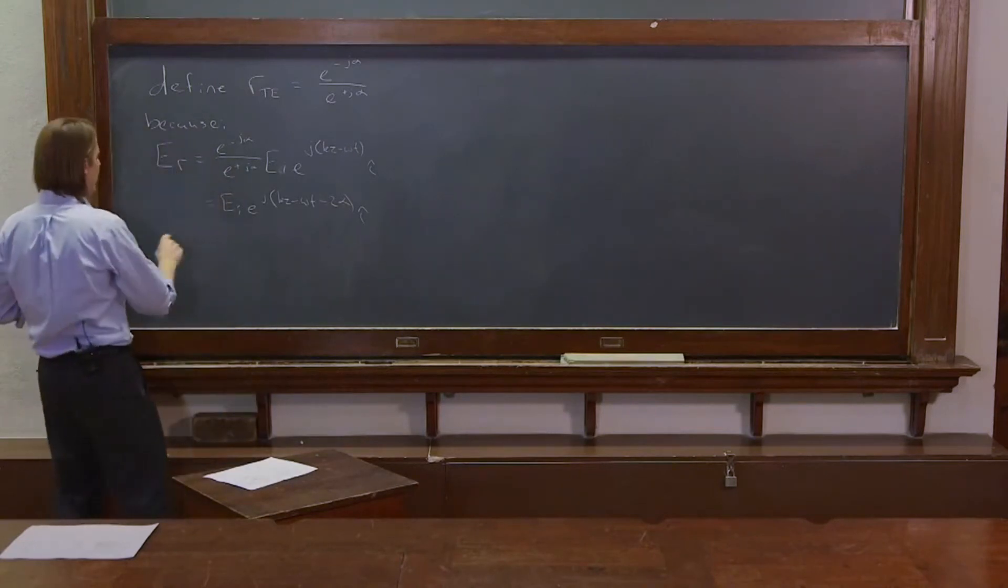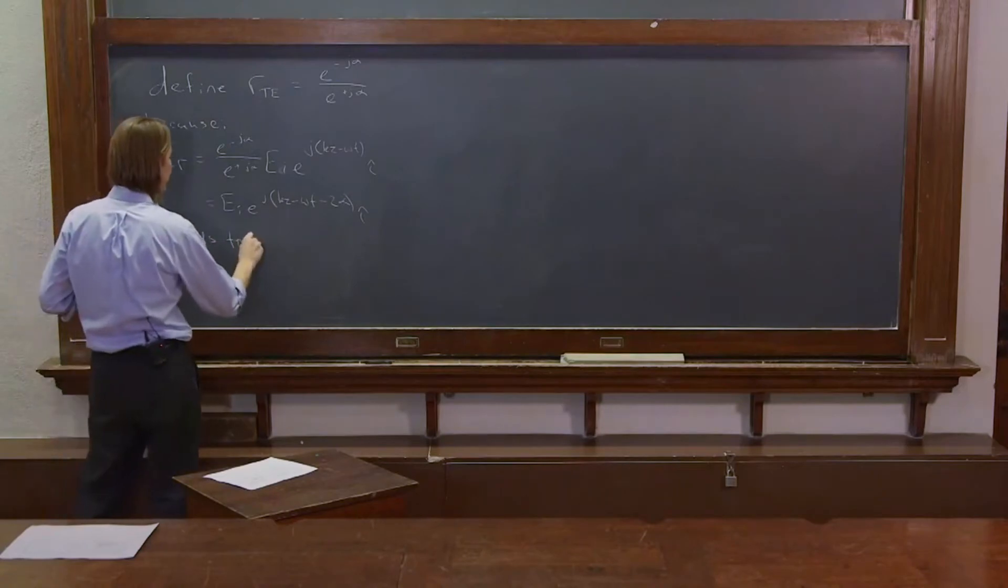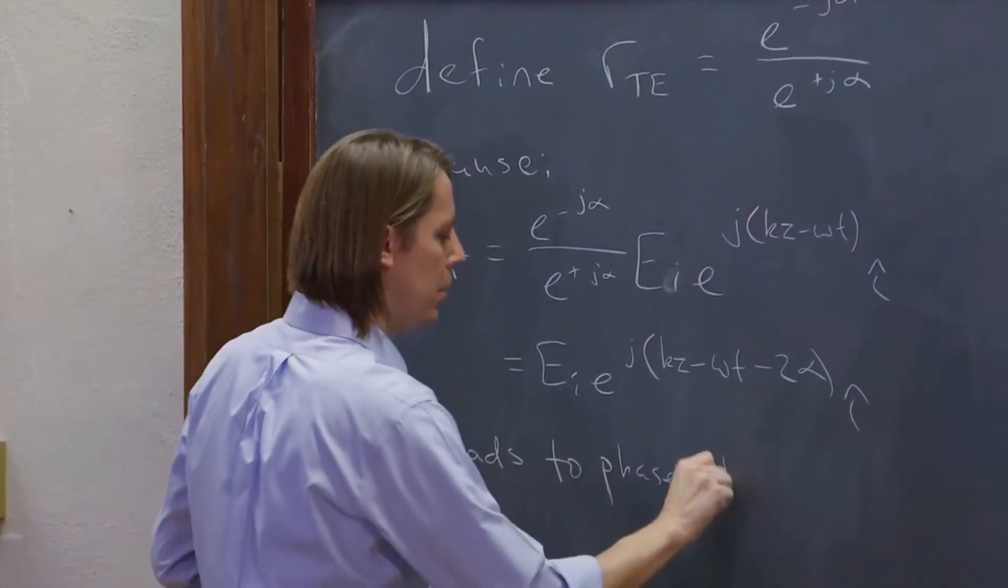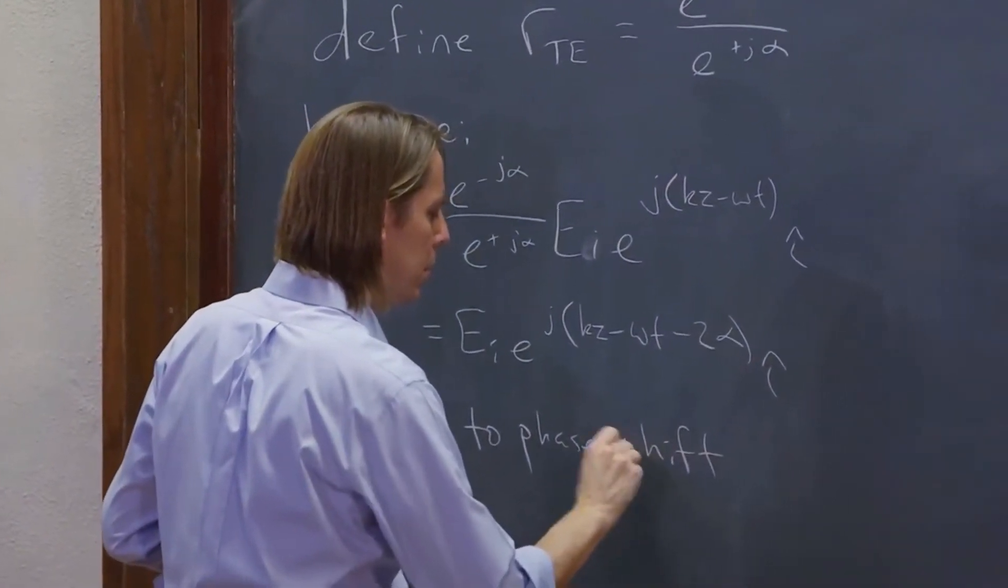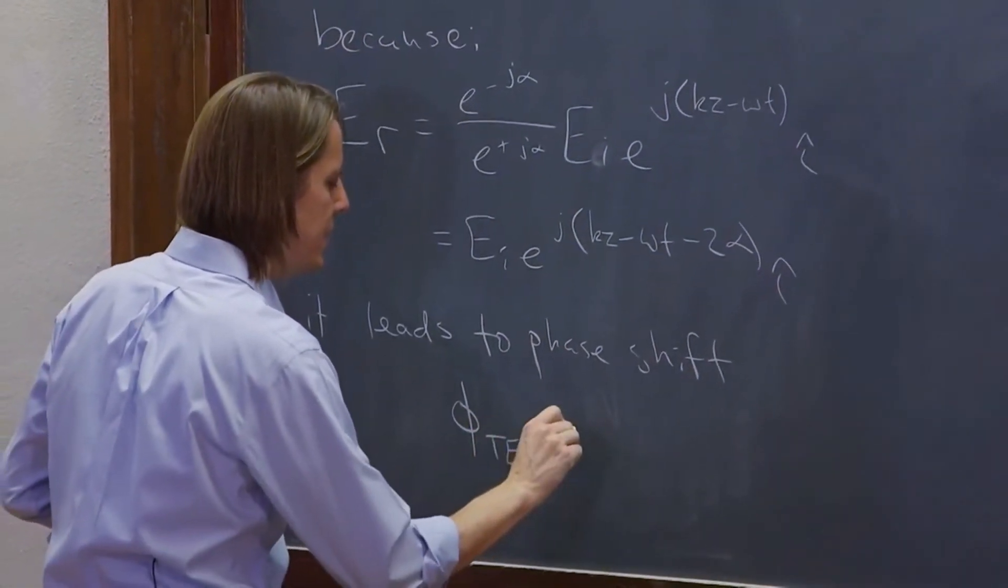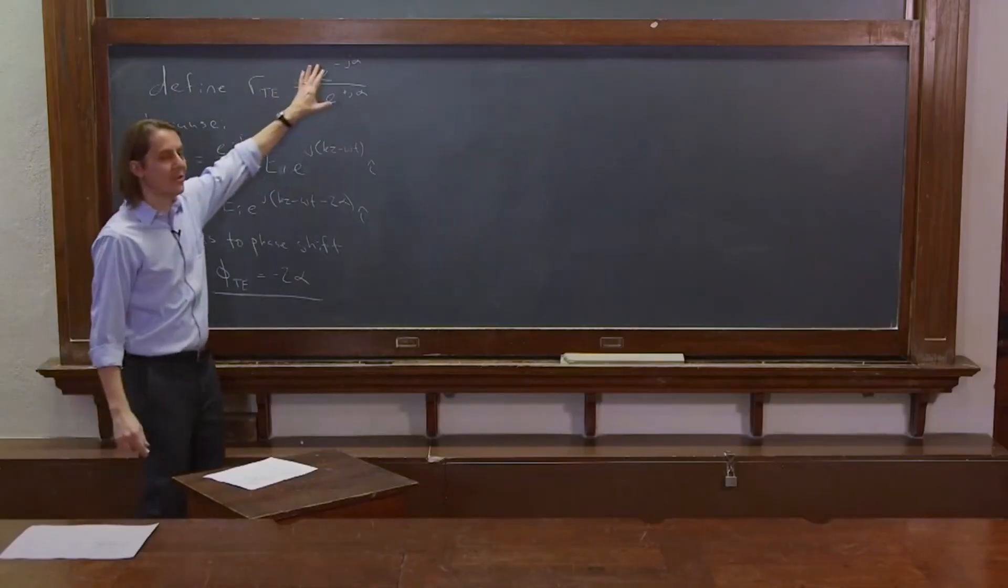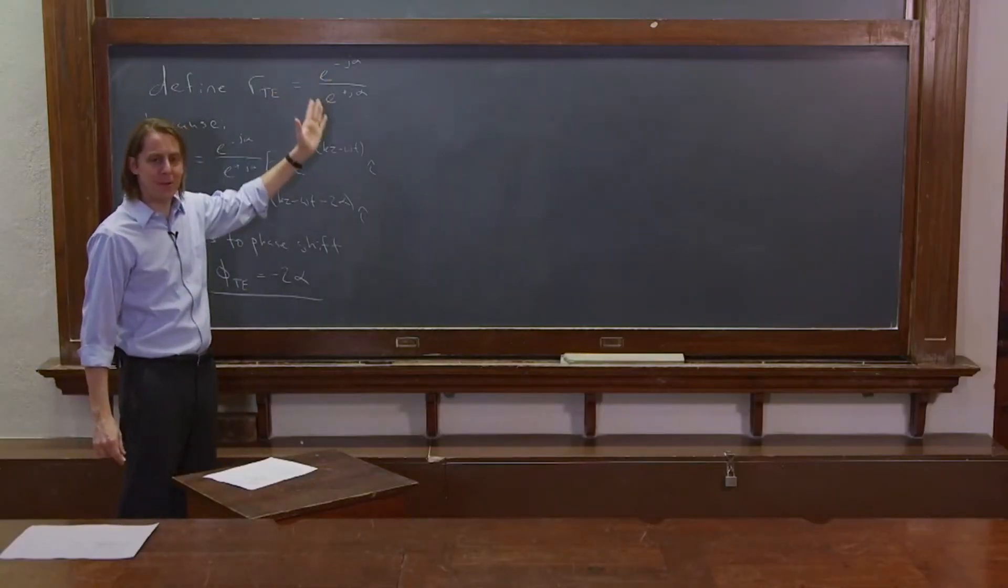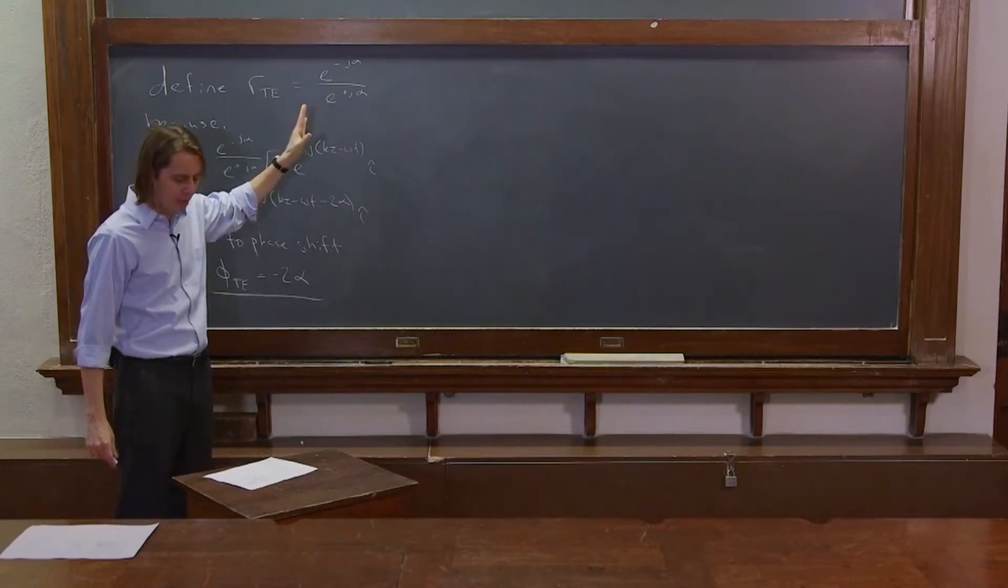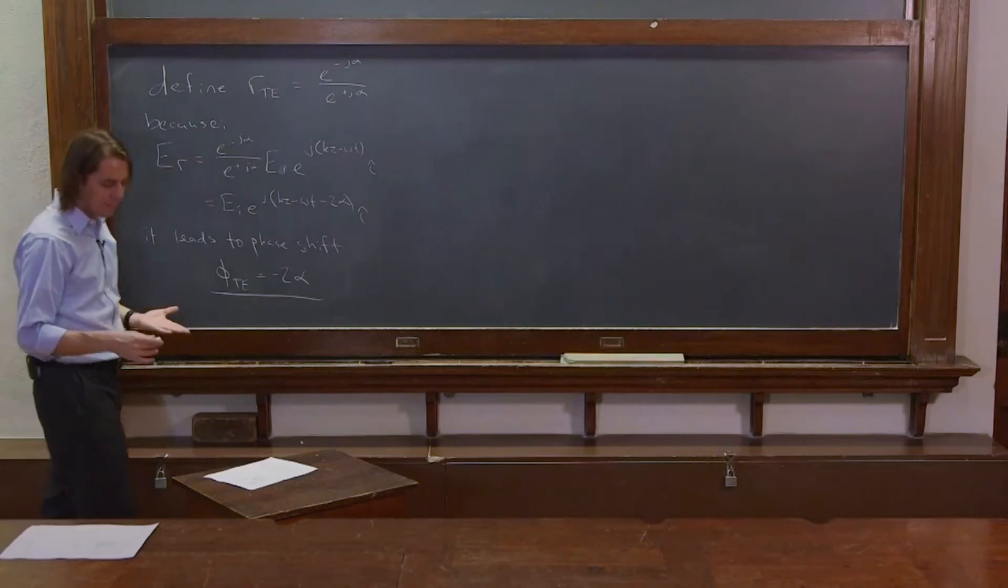So what you see is we do this because it leads to a phase shift phi TE equal to minus 2 alpha. So if it makes sense to write it that way, and if we could figure out if alpha is something sensible, that means that what's happening in this region is that the phase is changing.